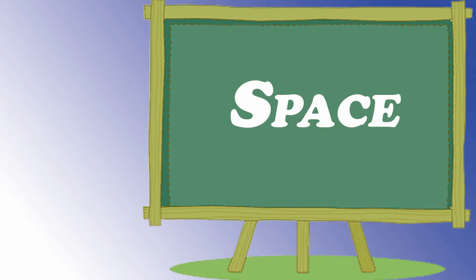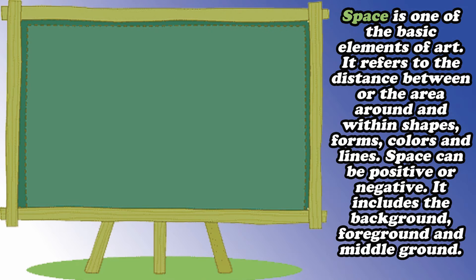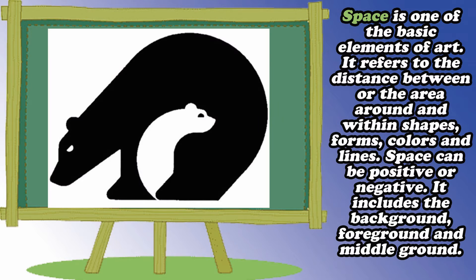Another visual element is what we call space. Space is one of the basic elements of art. It refers to the distance between or the area around and within shapes, forms, colors, and lines. Space can be positive or negative. It includes the background, foreground, and middle ground. Space is the area covered by the entire artwork. Understanding positive and negative space plays an important role in the composition of artwork.